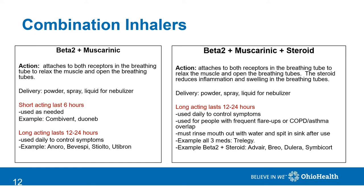Beta-2 and muscarinic agents can also be combined with a steroid. The steroid may be needed to control inflammation in the breathing tubes for people who have frequent exacerbations. They are given as sprays, powders, or liquid form in the nebulizer. These come only in long-acting versions at 12 to 24 hours and must be used daily to control symptoms. Since it contains a steroid, you must rinse your mouth with water and spit into the sink after use. Examples include Trelegy, which contains all three medicines. Examples of just a beta-2 agonist and a steroid include Advair, Breo, Dulera, or Symbicort.